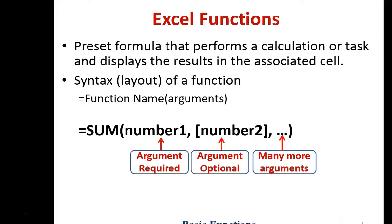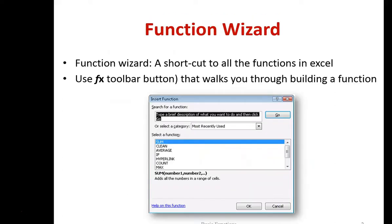A cell function is a preset formula that performs a calculation and returns the results in the cell. The syntax, or rules of the layout, of the function is: equals, function name, and then arguments surrounded by parentheses. For example, the SUM function is written as equals SUM, left parenthesis, number one, comma, number two, comma, ellipsis — meaning you can have many more arguments. Each argument is separated by a comma, and if the argument is optional it will be surrounded by brackets.